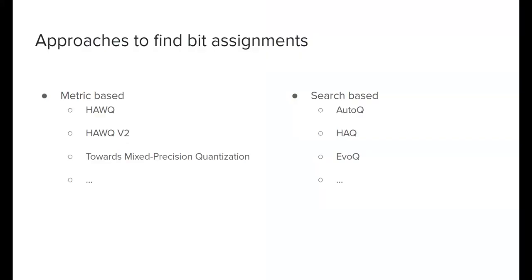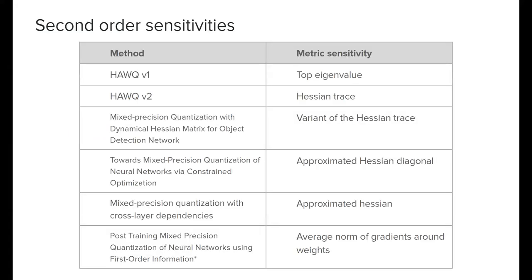As related work, to find bit assignments there are search-based approaches and metric-based approaches using heuristics or layer sensitivities. We focus specifically on sensitivities based on second-order information and the Hessian. All existing works don't work directly with the Hessian — they use heuristics, for example using the top eigenvalue of the Hessian per layer. Usually all these methods neglect most of the Hessian, focusing only on second derivatives within the same layer and ignoring cross-layer dependencies, using diagonal approximations.